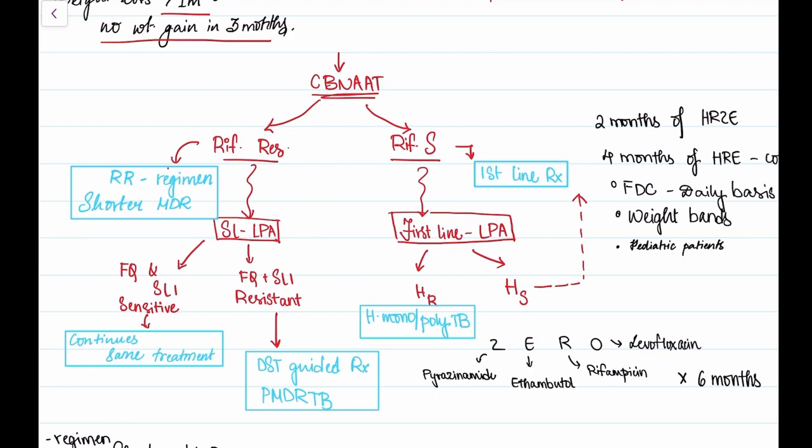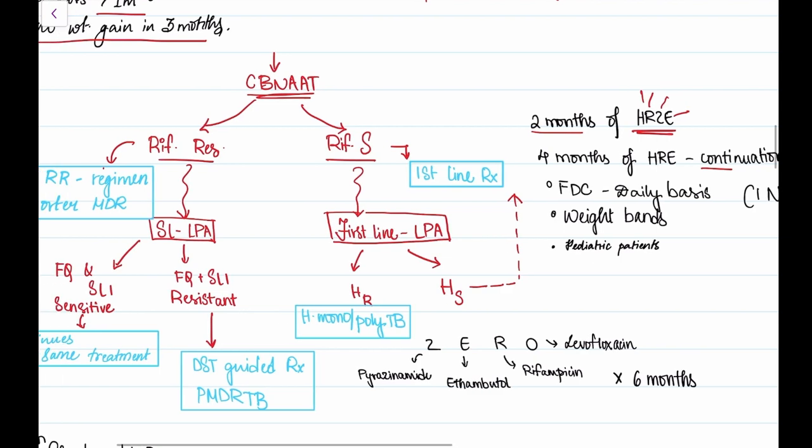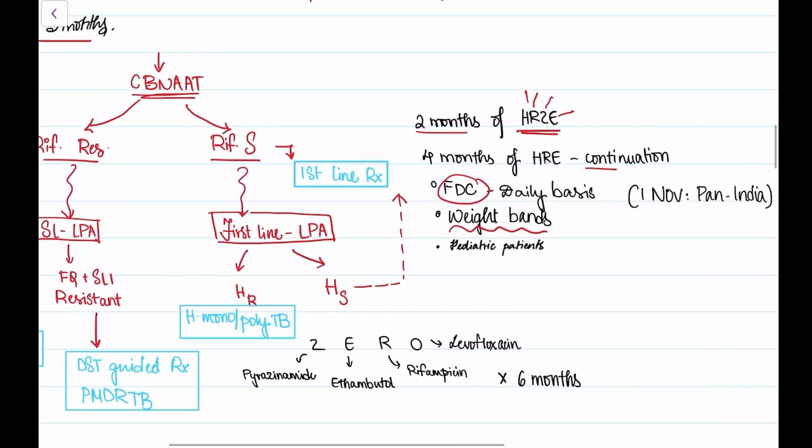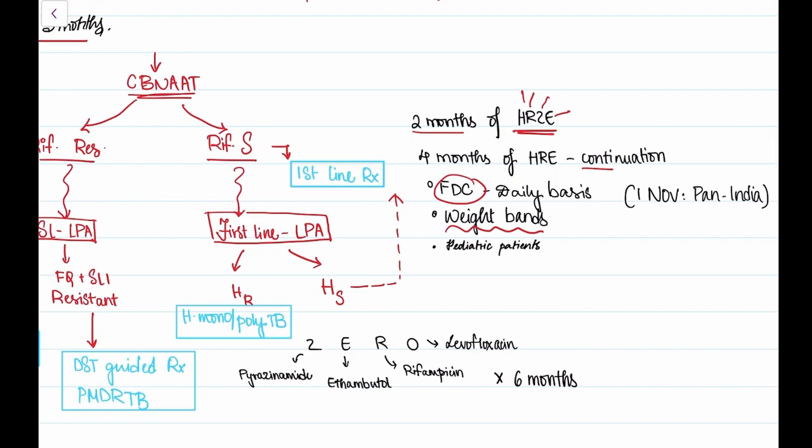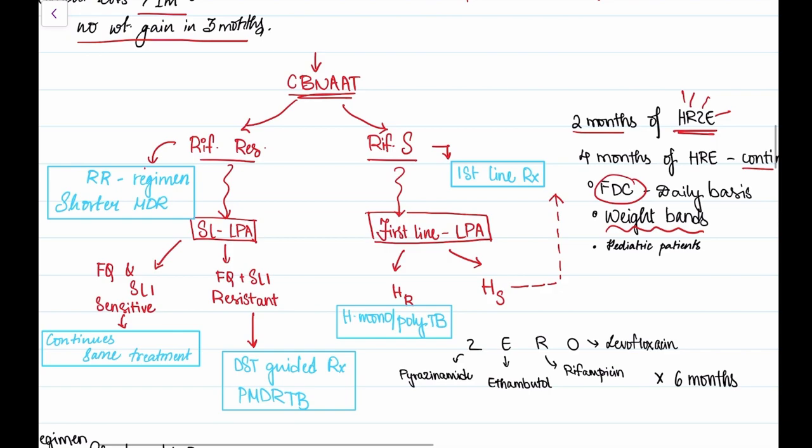The first line treatment is HRZE: isoniazid, rifampicin, pyrazinamide, and ethambutol. Main course treatment for two months, then continuation phase for four months. First line treatment is basically a fixed dose regimen, one tablet given on weight bands. It was first given on 1st November in a Pan-India movement in 2017, and it's also regulated for pediatric patients based on their weight bands.